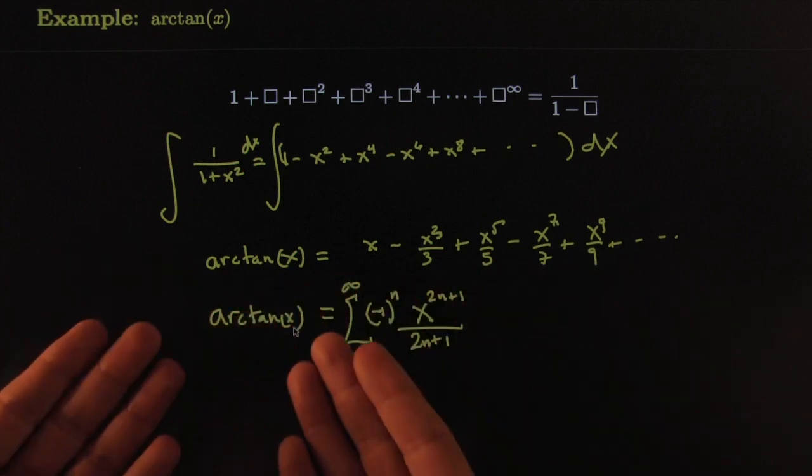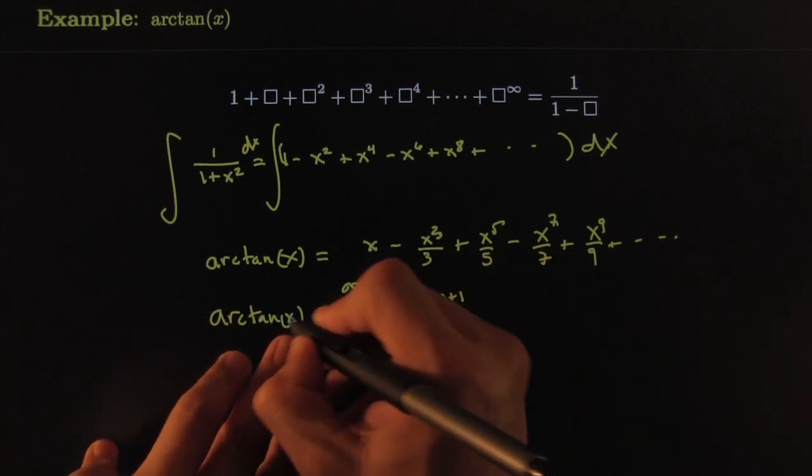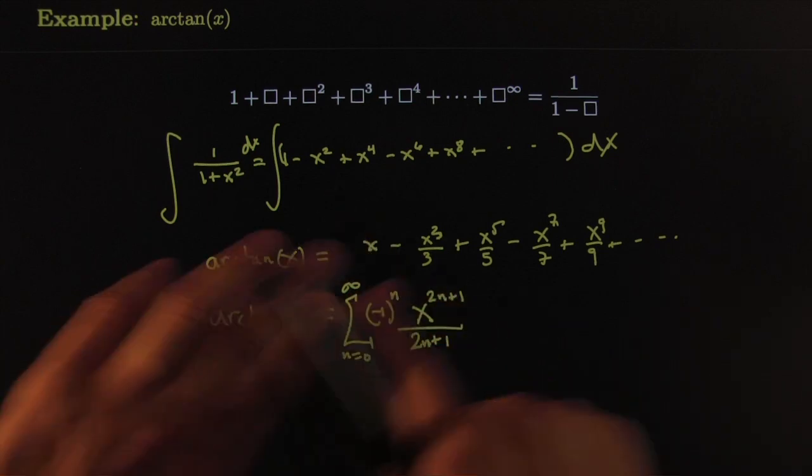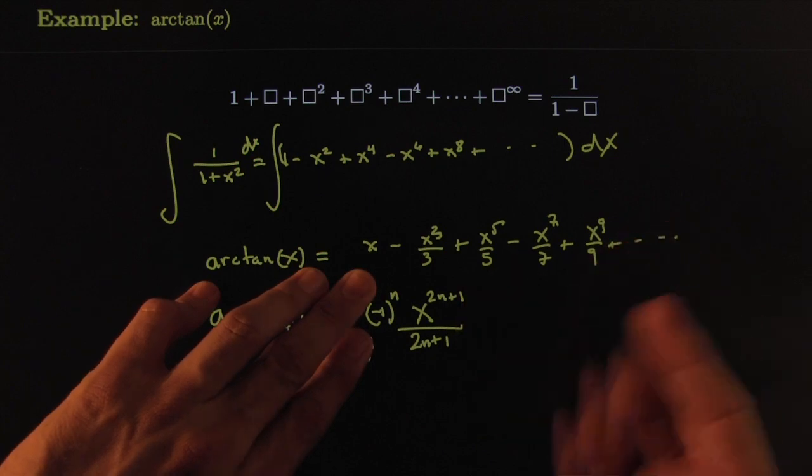When you're calculating, when you're punching arctangent of whatever, 0.72, it's not doing arctangent, it's really doing this. And you might ask, well, when do you stop? Well, however many little spots your calculator has, or however much accuracy it has room for, it'll stop whenever it gets to be that accurate.